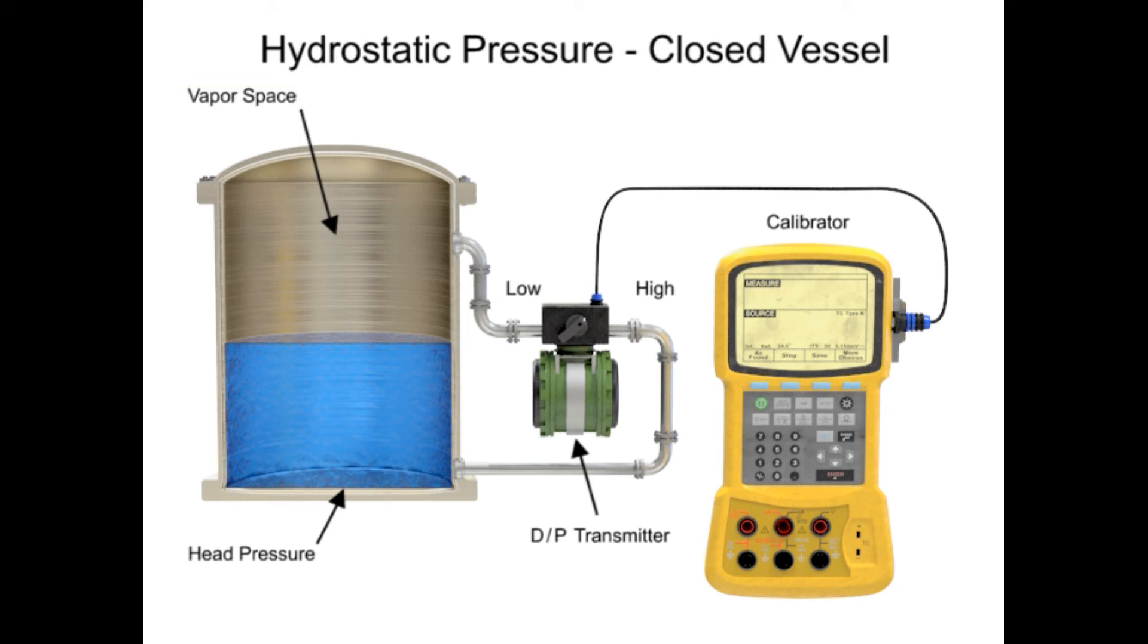The vessel pressure can be compensated for by using a differential pressure transmitter. This device has a high-pressure side input and a low-pressure side input. The high-pressure input is connected to the bottom of the tank to measure hydrostatic pressure. The low-pressure input is connected to the vapor space pressure. The transducer subtracts the vapor pressure from the high pressure, resulting in a value that represents the hydrostatic head proportional to the liquid level.